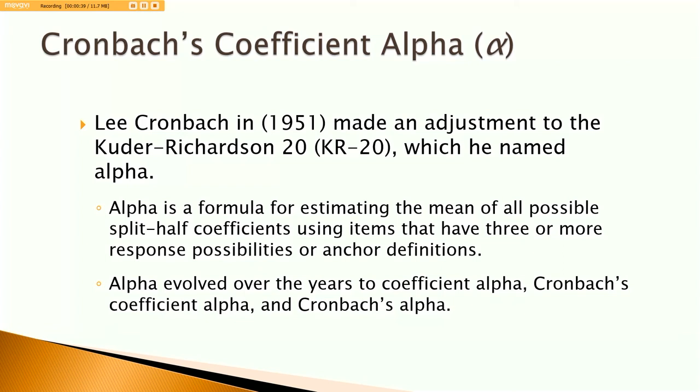As I mentioned, Lee Cronbach named the adjusted version of the KR-20 Alpha. And then over the years, it evolved to really one of three names: Coefficient Alpha, Cronbach's Coefficient Alpha or Cronbach's Alpha. And that was largely because a number of other concepts and statistics are already called Alpha. So this helped to distinguish his coefficient from the others.